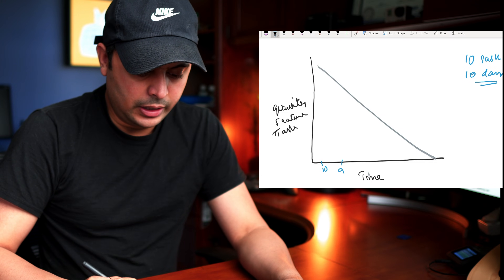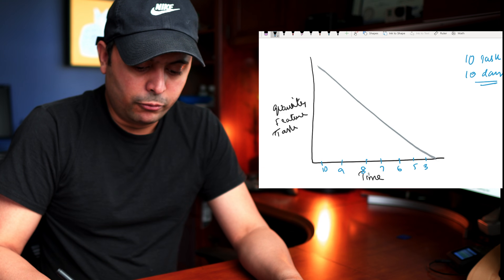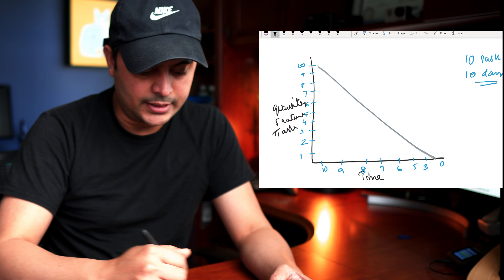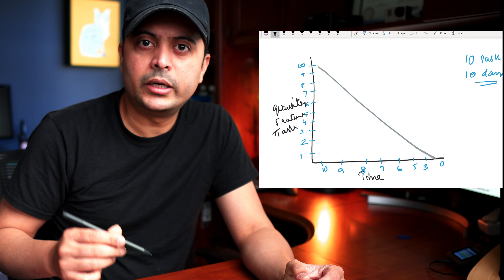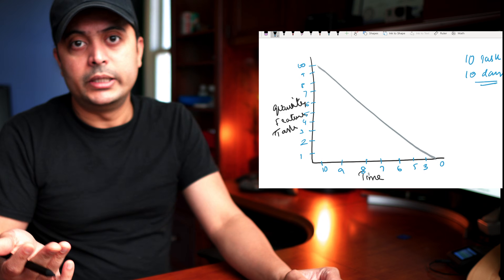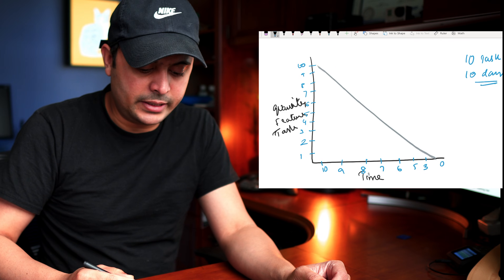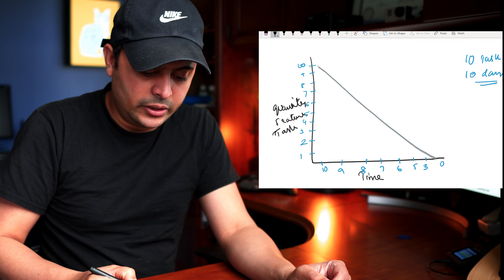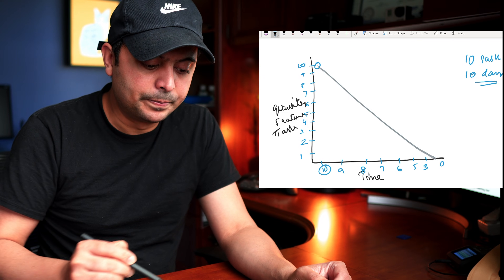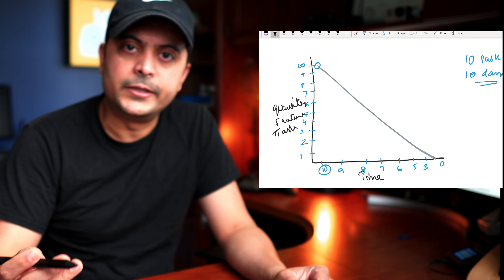You start counting down: day 10, 9, 8, 7, 6, 5, 4, 3, 2, 1, 0. On the Y axis you have 10 things to deliver — tasks, stories, features, whatever the case. You start on day 10 with all 10 things pending. That's where you begin.